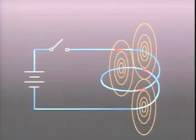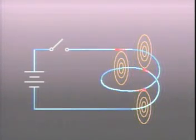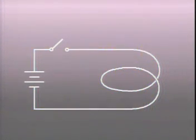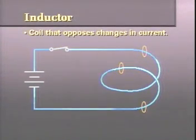When current stopped flowing, the counter voltage had a polarity to keep current flowing. Another way to define an inductor, therefore, is as a coil that opposes changes in current.